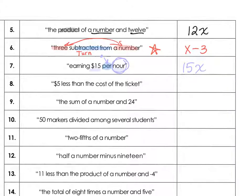For number 8, we have 5 less than the cost of the ticket, so we'll call the cost of the ticket x, and it's 5 less than the cost of the ticket. Is it 5 minus x, or x minus 5? Well, less than is a turnaround phrase, so x minus 5.